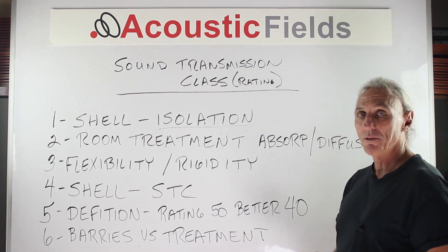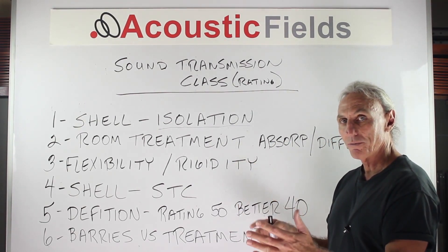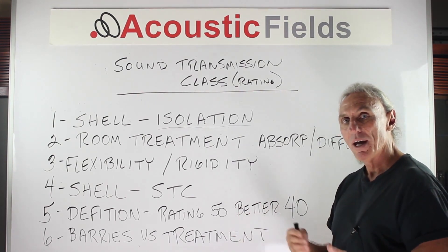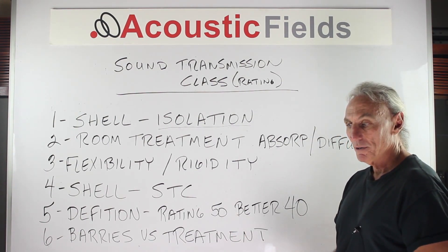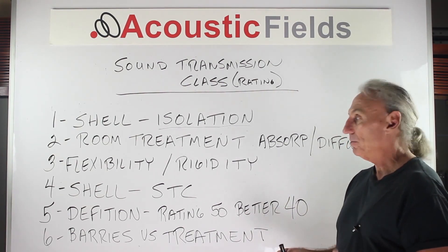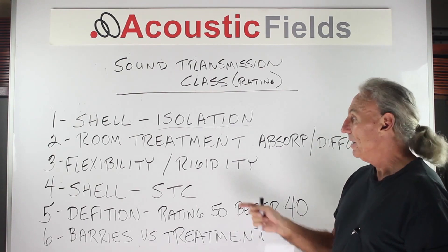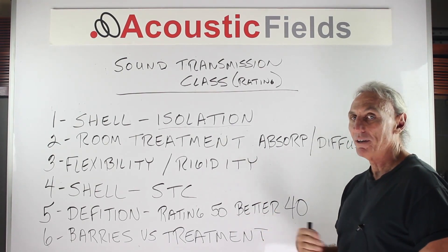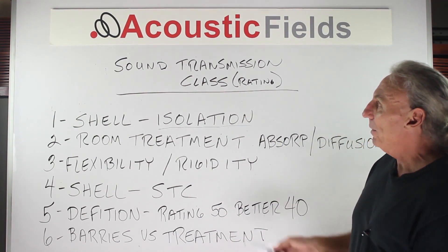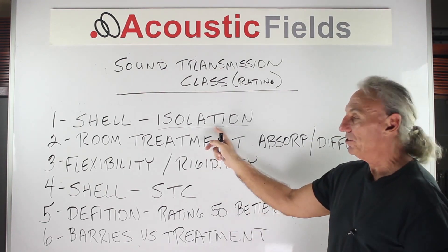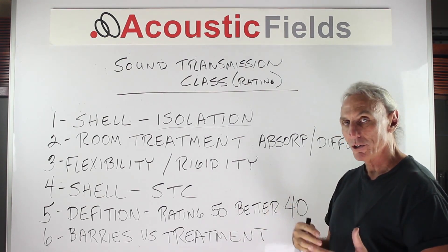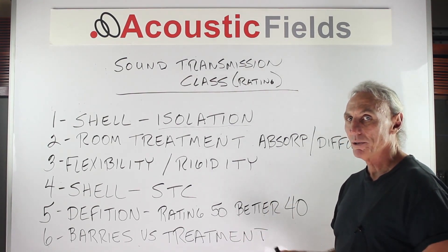A lot of us can't have a separate structure for isolation and a separate structure for sound absorption and diffusion technology. So we try to get the room to do both functions — we try to get it to isolate, and we also try to get it to absorb and diffuse. And I think here's where the confusion lies. Sound transmission class is a rating of the materials in the shell for isolation, not concerned with the absorption and diffusion that goes on inside.